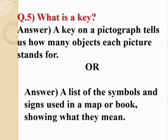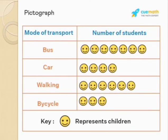Here are some examples. This pictograph shows mode of transport and number of students. The faces indicate the number of students coming to school by bus, car, walking, or bicycle. One face represents one child or children.